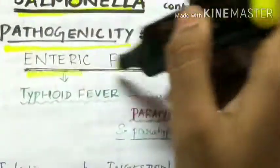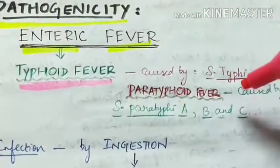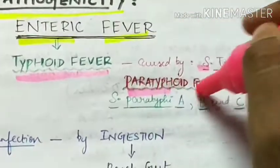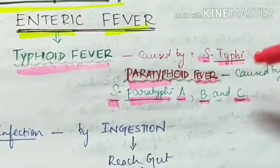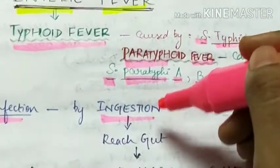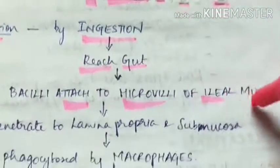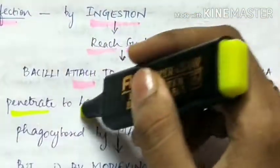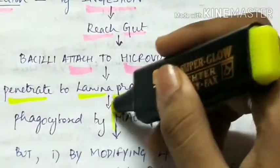First, enteric fever. Enteric fever consists of typhoid fever, which is caused by Salmonella typhi, and paratyphoid fever caused by Salmonella paratyphi A, B, and C. The infection occurs by ingestion, and the bacilli reach the gut where they attach to the microvilli of the ileal mucosa, then penetrate to the lamina propria and submucosa where they are phagocytosed by macrophages.